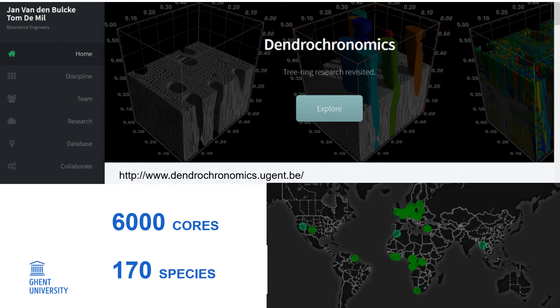So far, we've scanned up to 6,000 cores covering 170 species worldwide. The famous bristlecone pine tree I showed you was taken from the California White Mountains. We also scanned a lot of trees in the Congo Basin and in Europe.